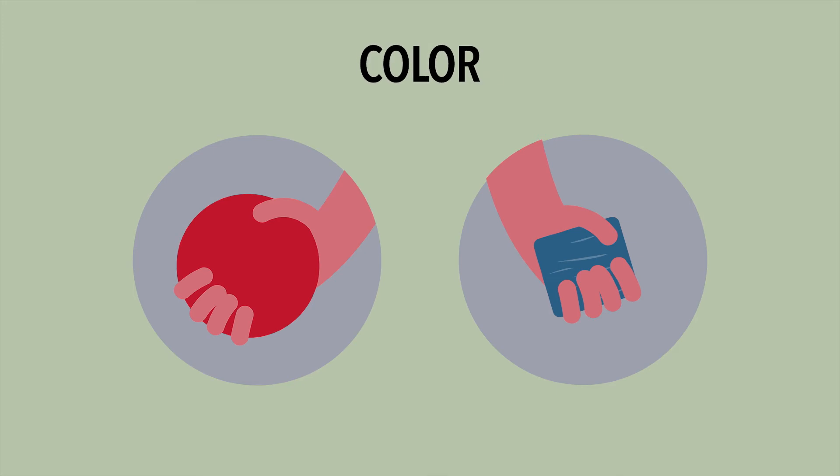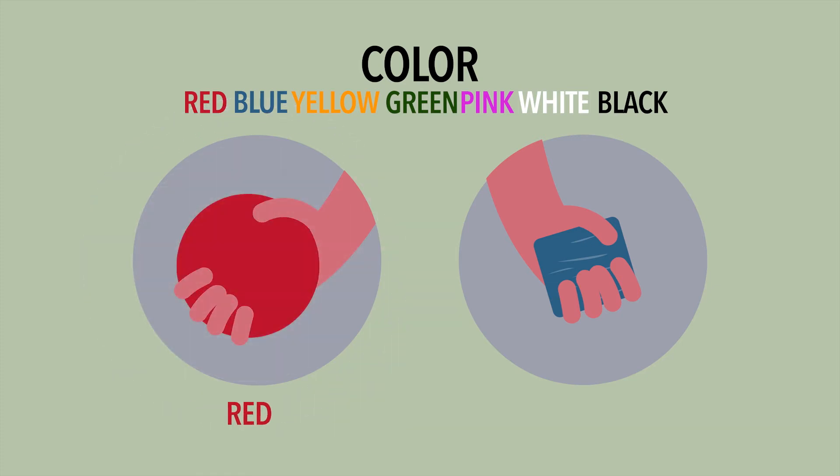How about its color? Colors can be red, blue, yellow, green, pink, white, black, and so much more. In our case, the ball is color red, while the block of wood is color blue.